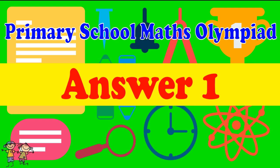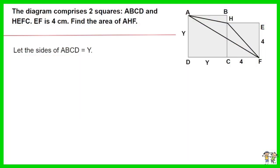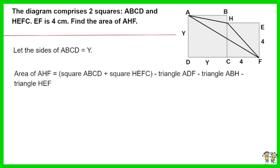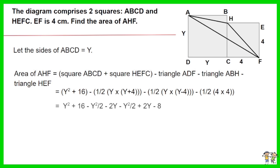Answer for question 1. Let the sides of ABCD equals Y. Area of AHF equals square ABCD plus square HEFC minus triangle ADF minus triangle ABH minus triangle HEF. This equals Y squared plus 16 minus half times Y times Y plus 4 minus half times Y times Y minus 4 minus 8. Figure out the equation as shown. Area of AHF is 8 centimeters squared.